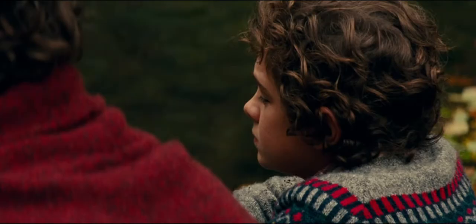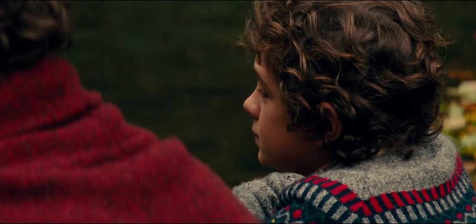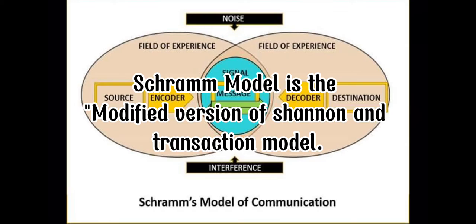And at number one: the Scram model. You're probably wondering what makes the Scram model different from the other two. Well, the Scram model is the modified version of the Shannon Weaver model and is also similar to the Transaction model because of its element called feedback.